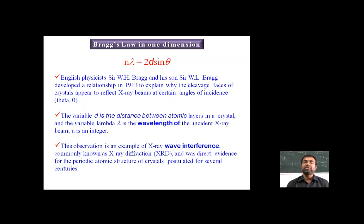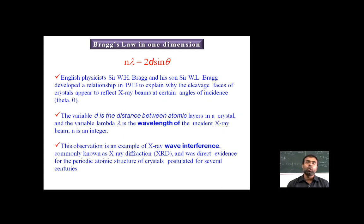Bragg's Law in one dimension is: Nλ = 2d sinθ. English physicists W.H. Bragg and his son W.L. Bragg developed this relationship in 1913 to explain why cleavage faces of crystals appear to reflect X-ray beams at certain angles of incidence θ. Here, d is the distance between atomic layers in the crystal, λ is the wavelength of the incident X-ray beam, and N is an integer. This is an example of X-ray wave interference, known as X-ray diffraction, and was direct evidence for the periodic atomic structure of crystals.